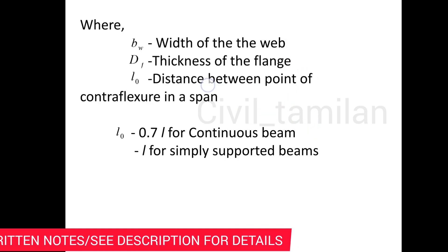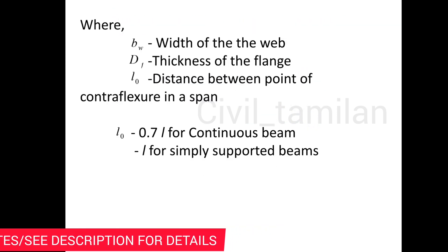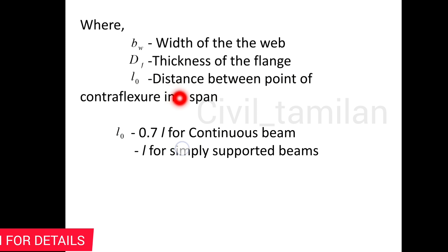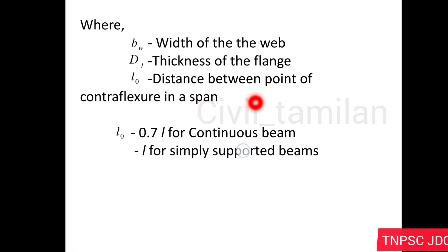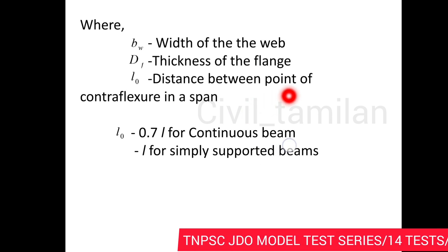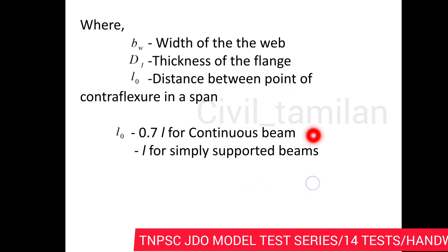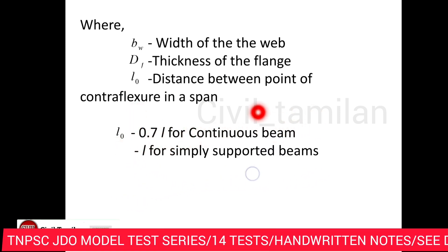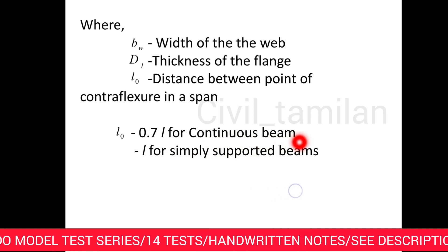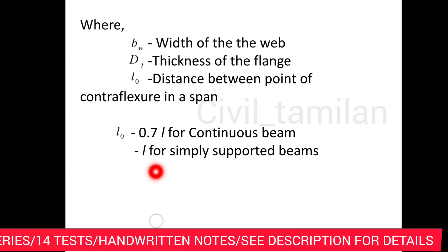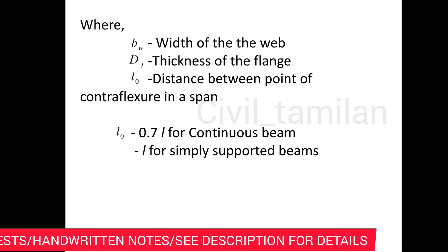L0 is the distance between points of contra-flexure in a beam. Let's see how to calculate L0. For a continuous beam, L0 is 0.7L. For a simply supported beam, L0 equals L. This is the value for specific conditions.